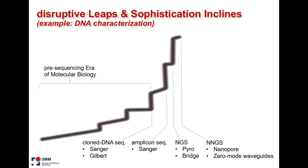We will have huge additional data coming into this cloud. As just one example: DNA characterization — disruptive leaps in sophistication, as you can see. In molecular biology in the pre-sequencing era, there were always some steps, then long times of incremental improvement, then another quantum leap. From cloned DNA sequencing using Sanger or Gilbert methods, there was amplicon sequencing, and now we have NGS sequencing by various technologies.